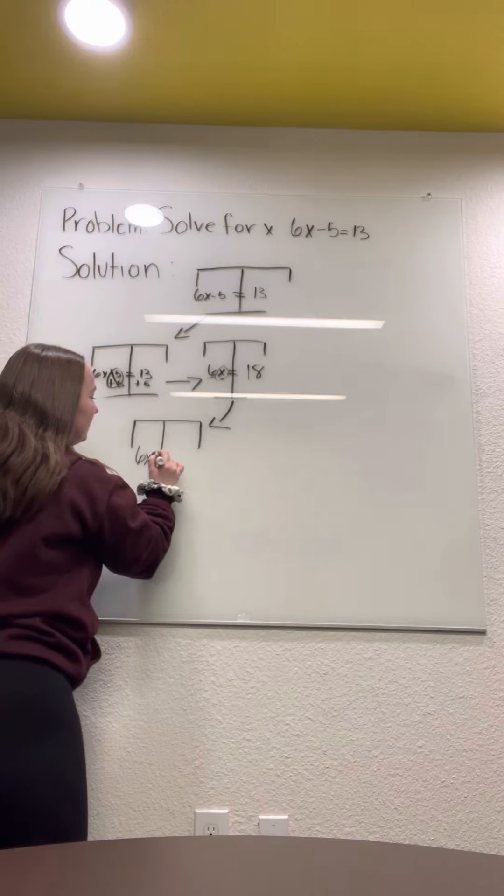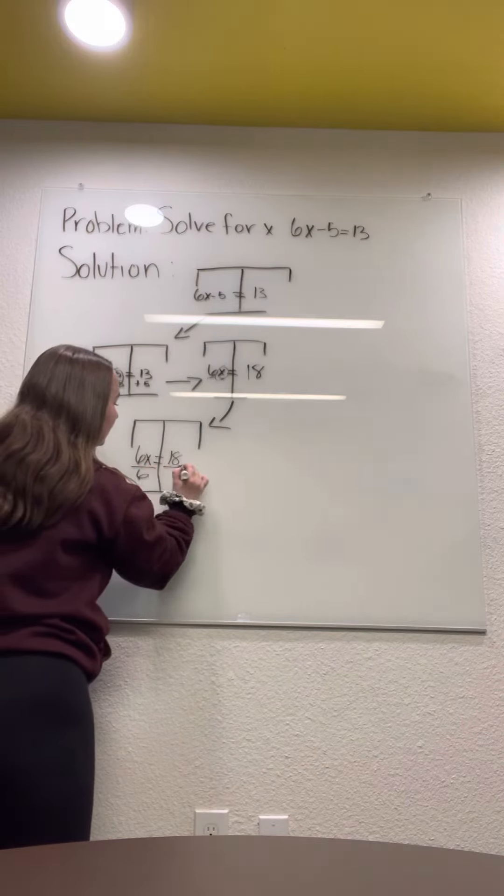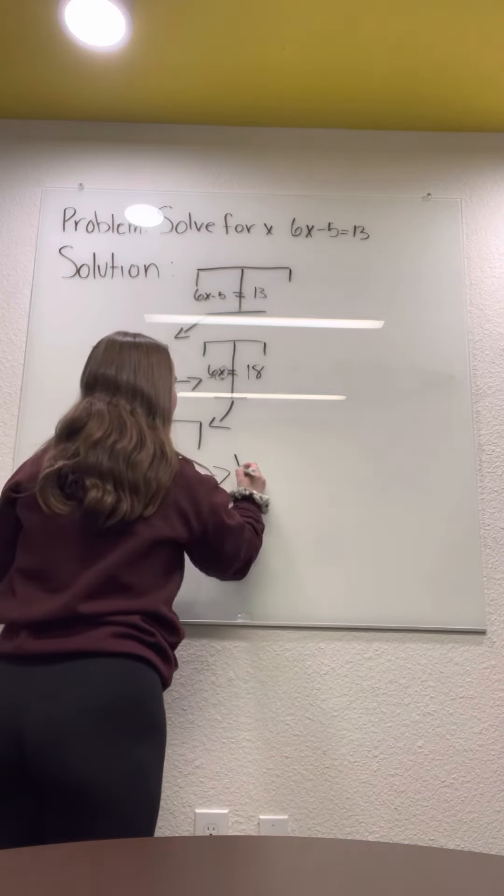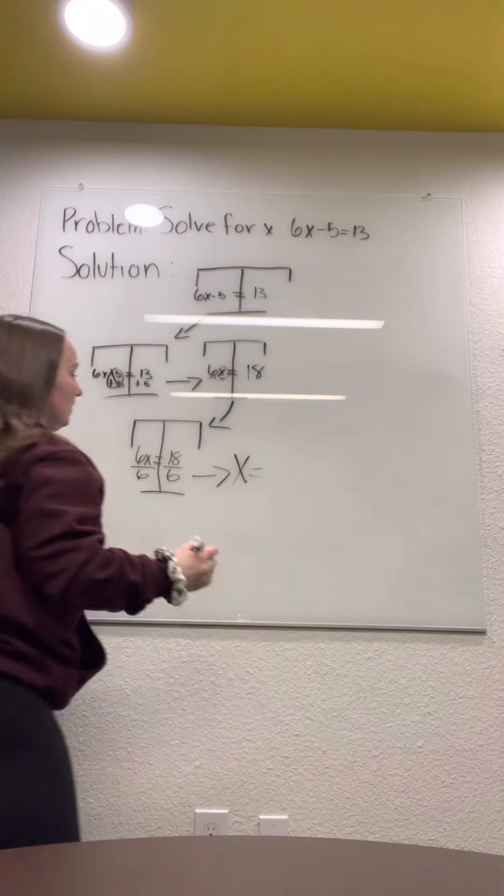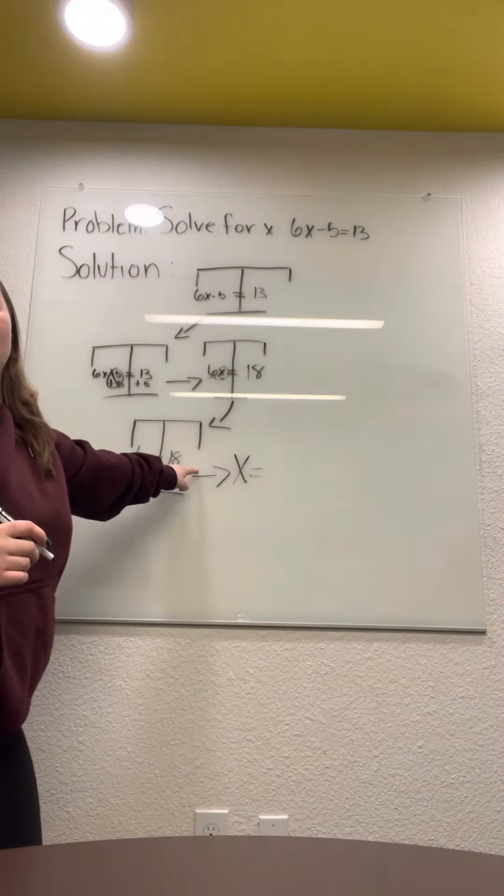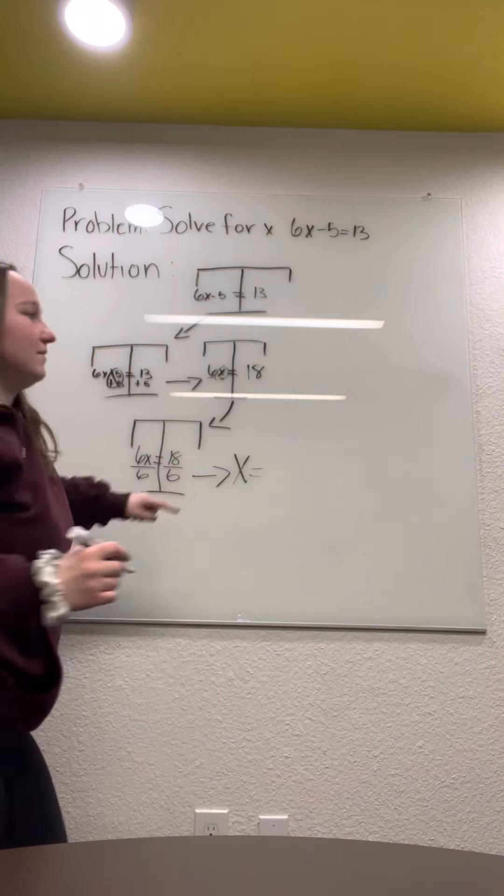We are going to do 6x equals 18, divide on both sides by 6, and then we'll get x equals 18 divided by 6 is 3.